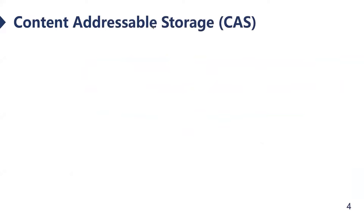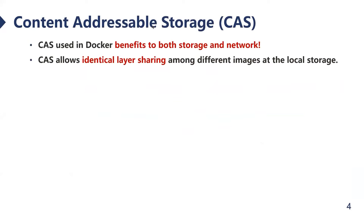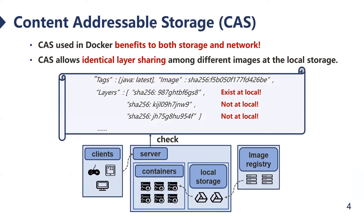The scheme currently used in Docker is Content Addressable Storage. It can save both storage and network consumption. Specifically, it allows sharing of identical layers among different images at local storage. When an image is requested, the Docker daemon checks local storage to identify whether each layer exists. Then only the layers not at local are downloaded from the registry.